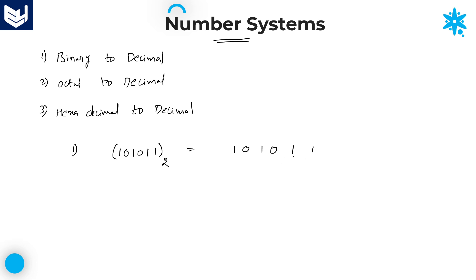Place values of any binary number system start with 2 power 0. While going from right side to left side, the power values are in increasing order: 2 power 1, 2 power 2, 2 power 3, 2 power 4, and 2 power 5.